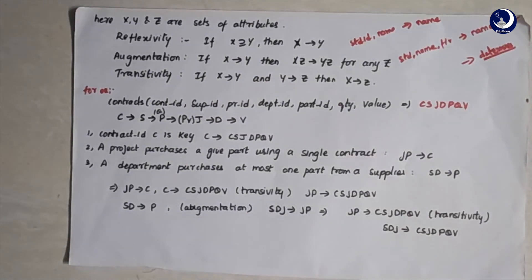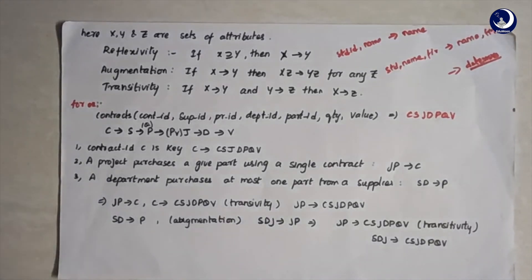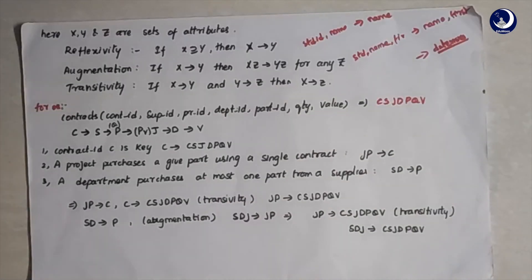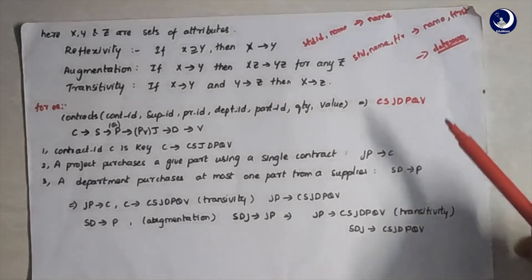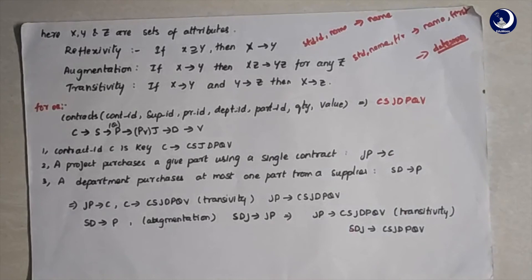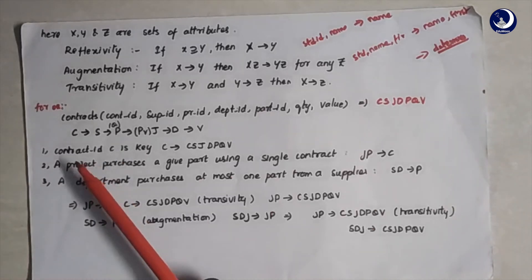So if a particular instance holds all three rules, then we can say that particular functional dependency is implied on that relation. Let's look at a full example. We have a relational schema called Contracts with attributes: contract ID (C), supplier ID (S), project ID (J), department ID (D), part ID (P), quantity (Q), and value (V).